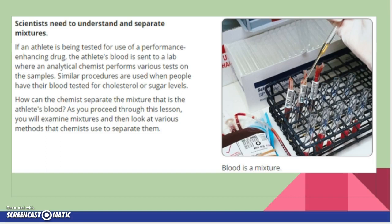So here's a few real-life examples of where it's used. Scientists need to understand and separate mixtures. If an athlete is being tested for use of a performance-enhancing drug, the athlete's blood is sent to a lab where an analytical chemist performs various tests on the samples. Similar procedures are used when people have their blood tested for cholesterol or sugar levels. How can the chemist separate the mixture that is athlete's blood? As you proceed through this lesson, we're going to examine mixtures and look at various ways that chemists can separate them.